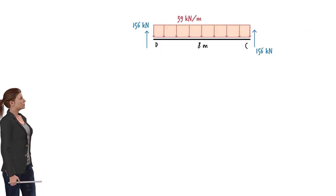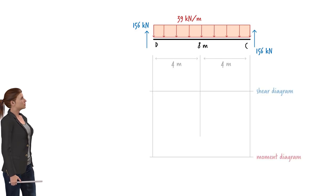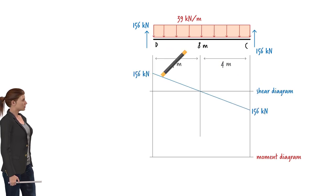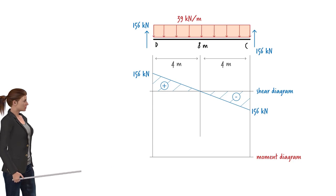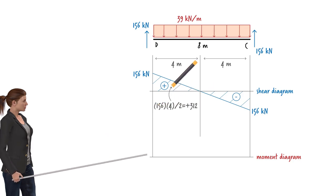Segment CD can be viewed as a simply supported beam subjected to a uniformly distributed load. From previous lectures, we know how to draw the shear and moment diagrams for such a beam. The shear diagram is an inclined line starting at positive 156 kN and ending at negative 156 kN. The line crosses the x-axis at the midpoint of the beam. To draw the moment diagram, we need to calculate the areas under the shear diagram. This area equals positive 312, and this negative region has an area of 312.